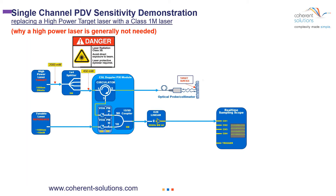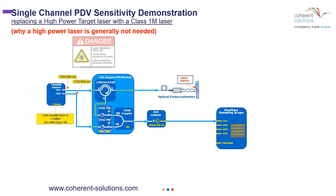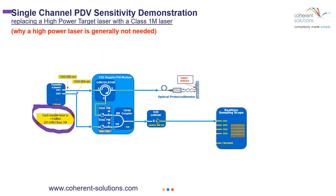Instead, we're going to replace that with two Coherent Solutions tunable lasers, which have a much more reasonable amount of power — plus 15 dBm — and are Class 1M. That really alleviates some of your safety concerns. The target channel I'm going to be setting to 1,500 nm, and the reference laser I'll be setting to 1,500.004 nm.